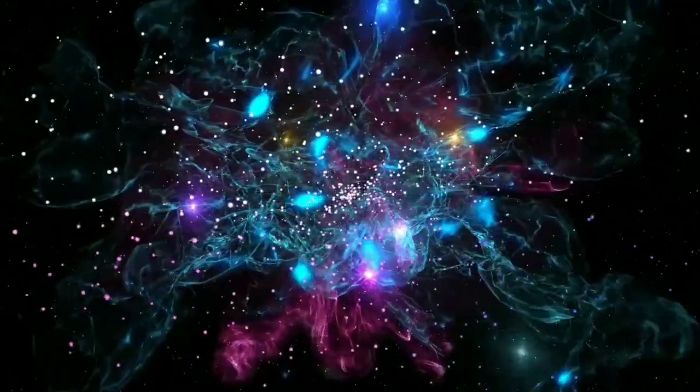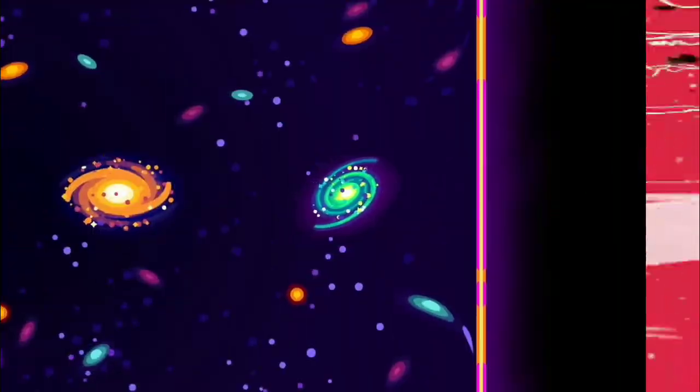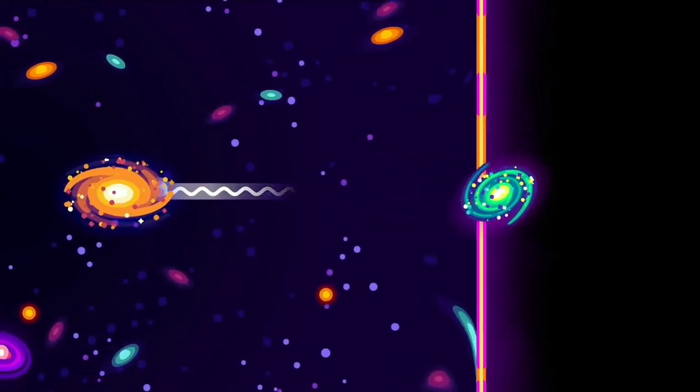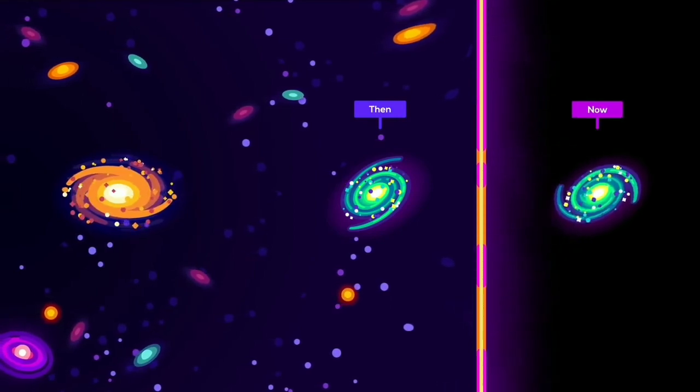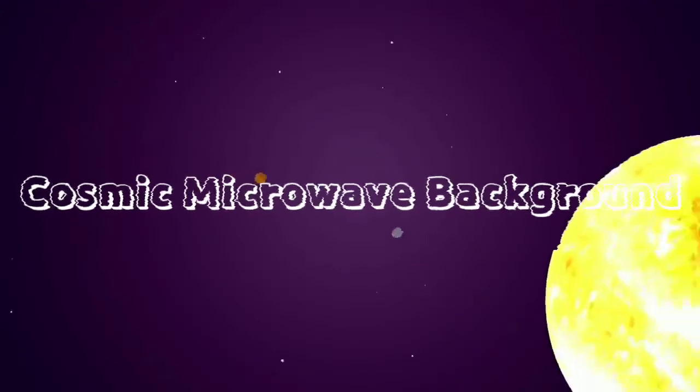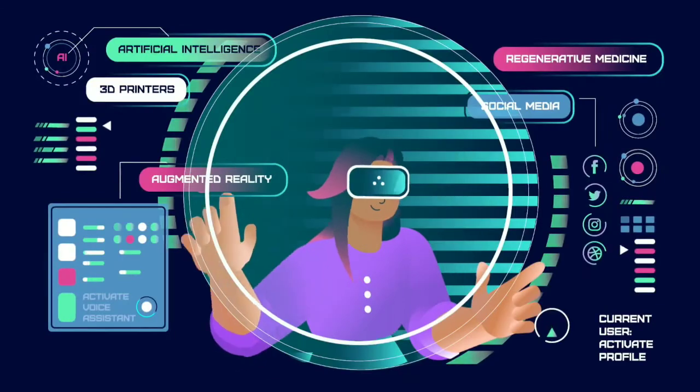But because the universe is constantly expanding, this isn't the case. When we observe a distant galaxy or star, what we are really seeing is where it was when it first emitted the light. But by the time the light reaches us, the galaxy or star is much farther away than it was when we saw it. Using cosmic microwave background radiation, we can work out how fast the universe is expanding.